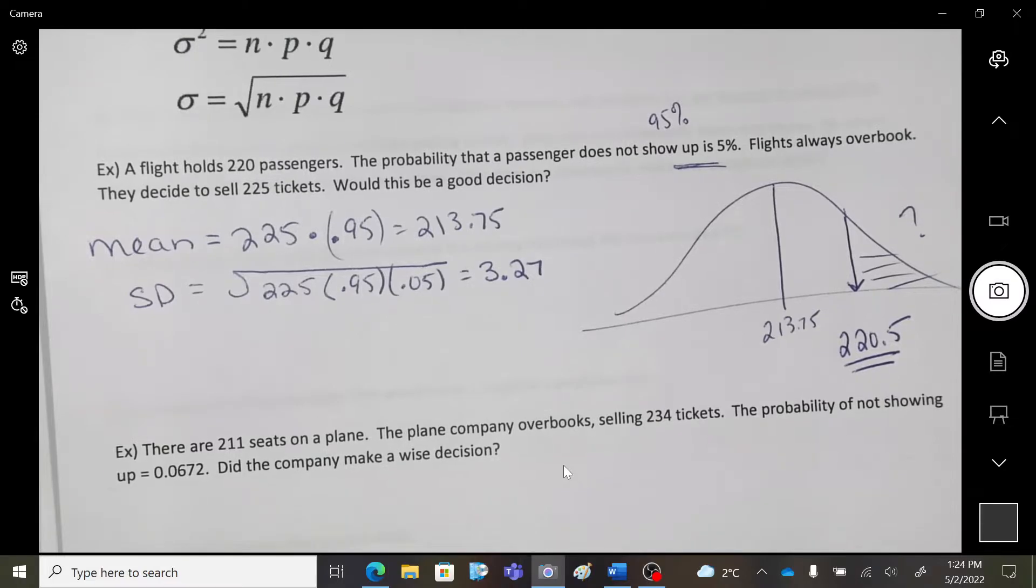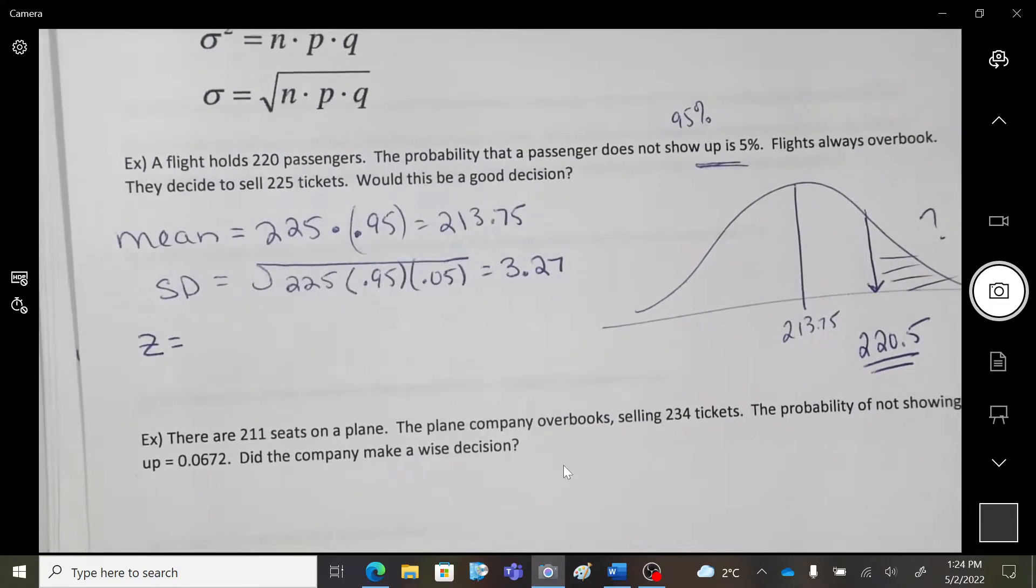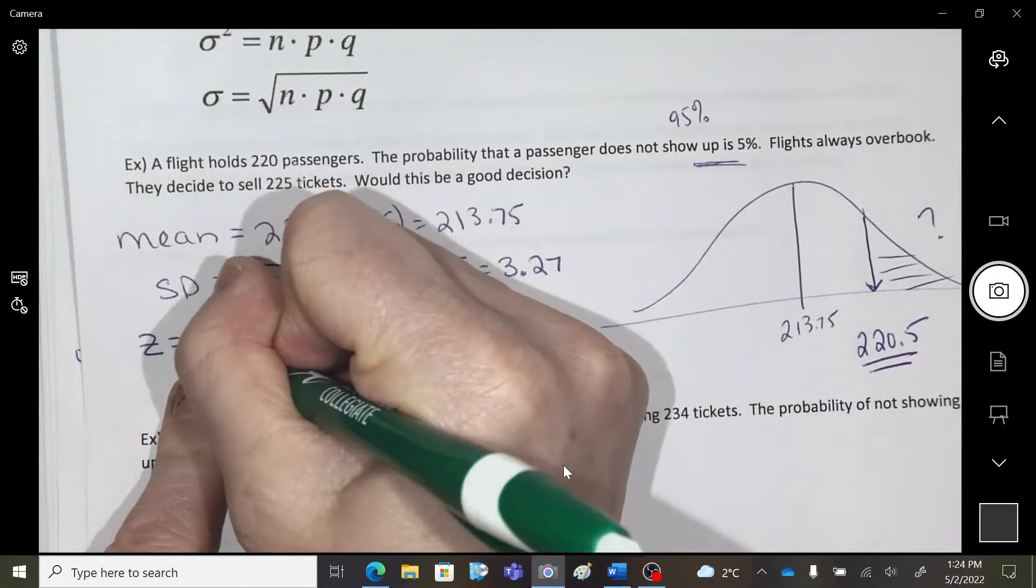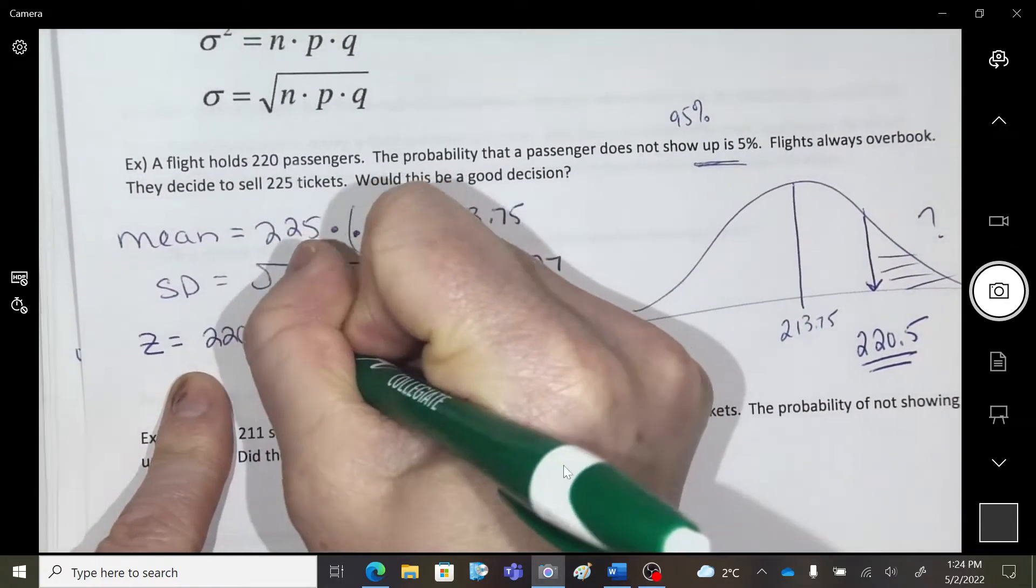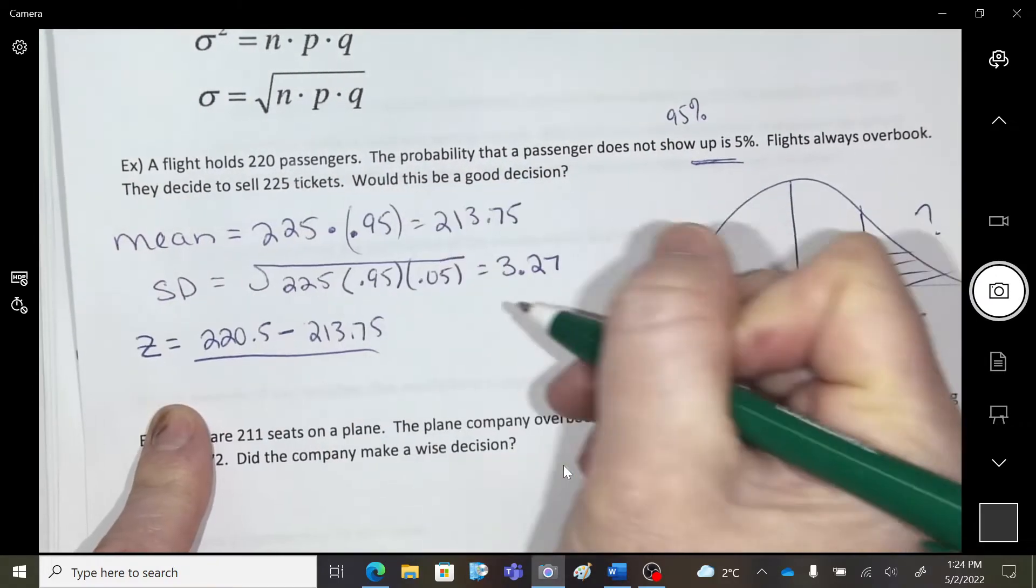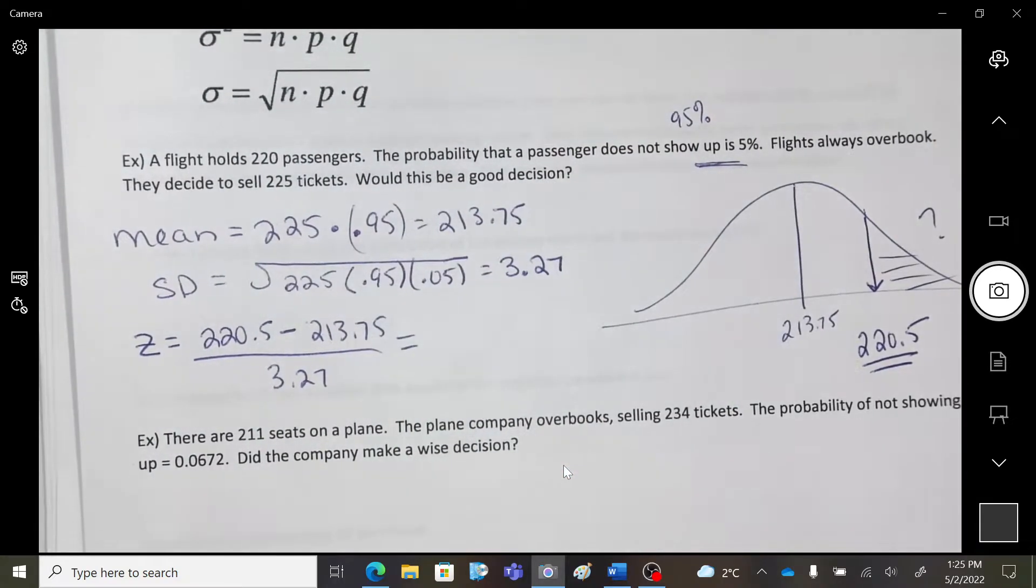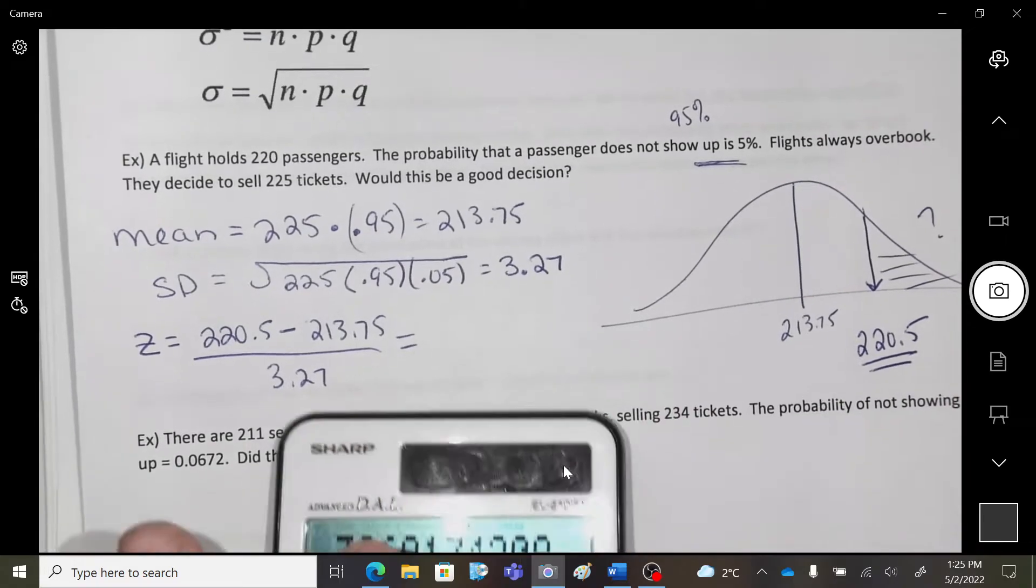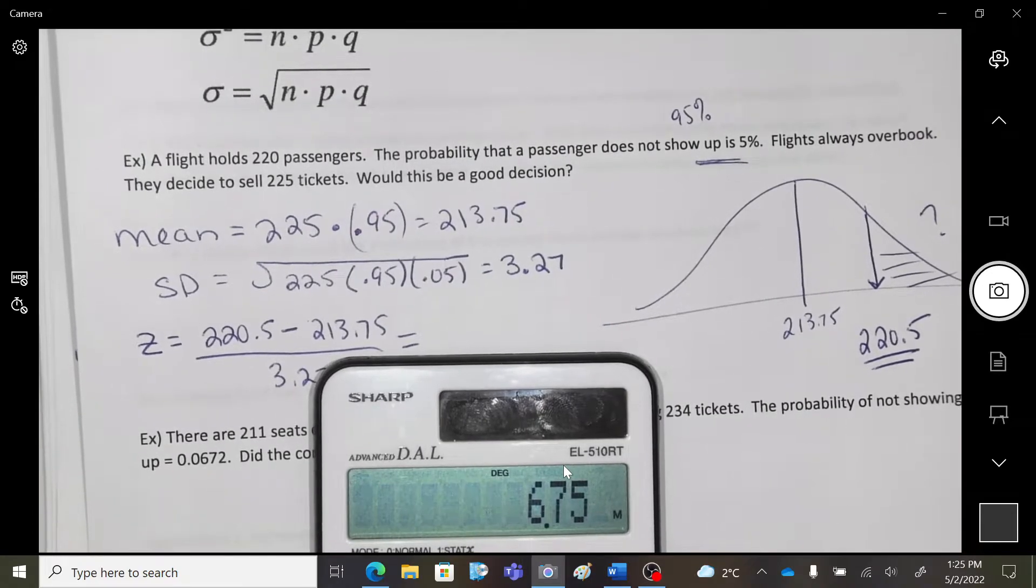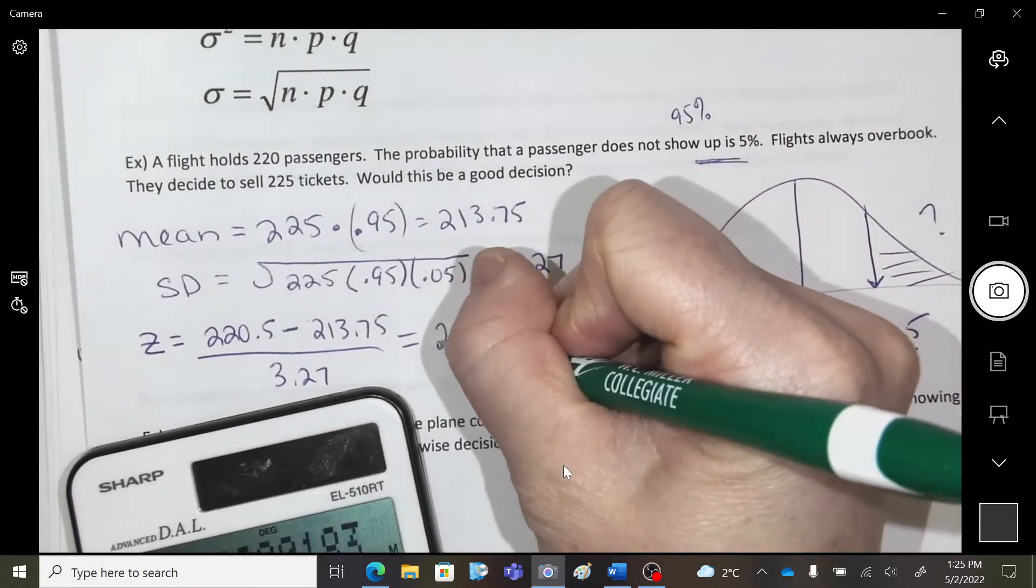Okay. So, now I'm going to go to my Z scores. Okay. So, I'm going to do the process. So, my score. 220.5 subtract the mean score. Divided by the standard deviation. Is a Z score of... I got 2.06.